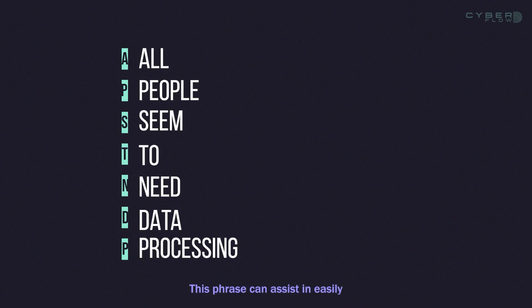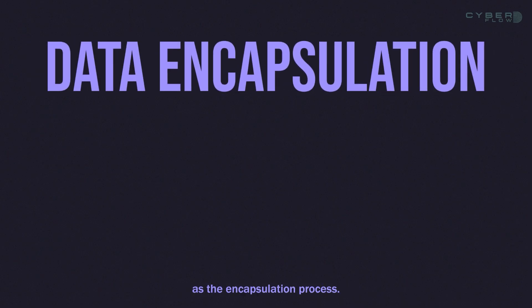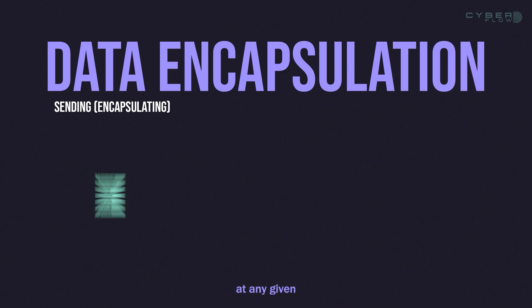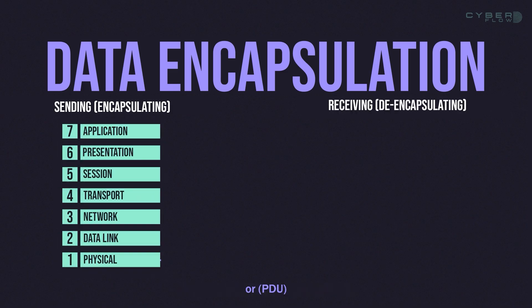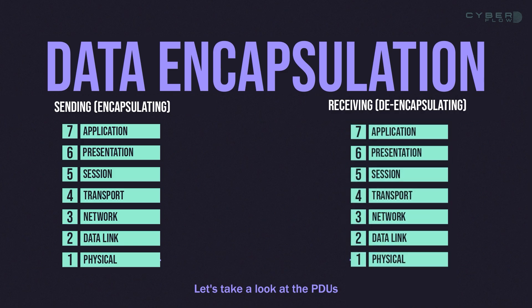This phrase can assist in easily recalling the order of the layers in the OSI model from top to bottom. As application data is passed down the protocol stack on its way to be transmitted across the network media, various protocols add information to it at each level. This is commonly known as the encapsulation process. The data structure at any given layer is called a protocol data unit, or PDU. Let's take a look at the PDUs at each layer of the OSI model.